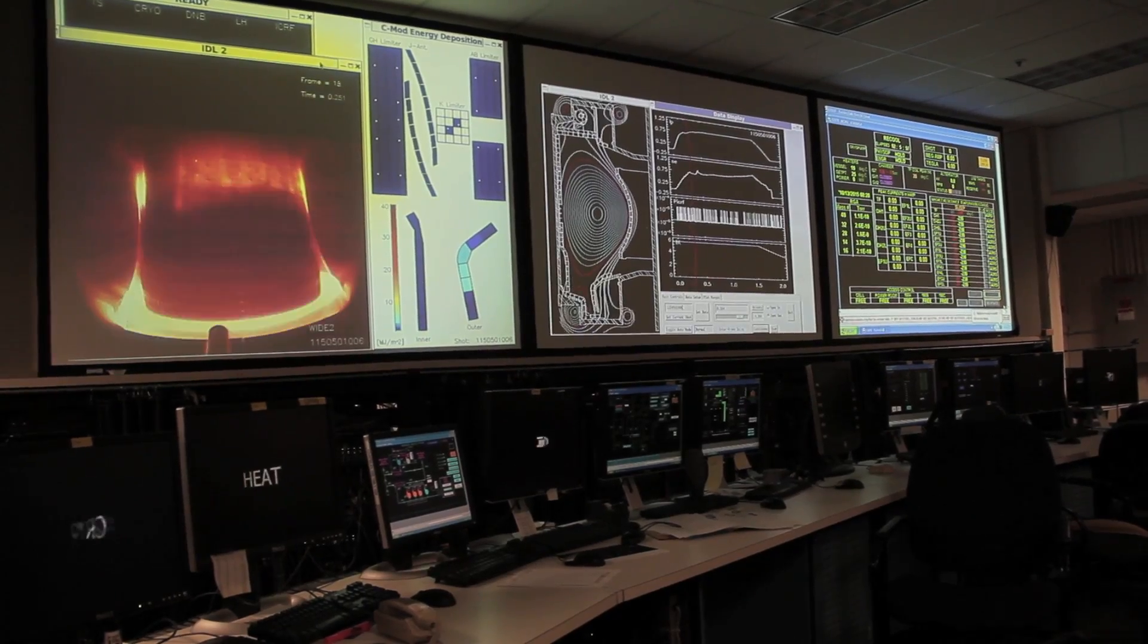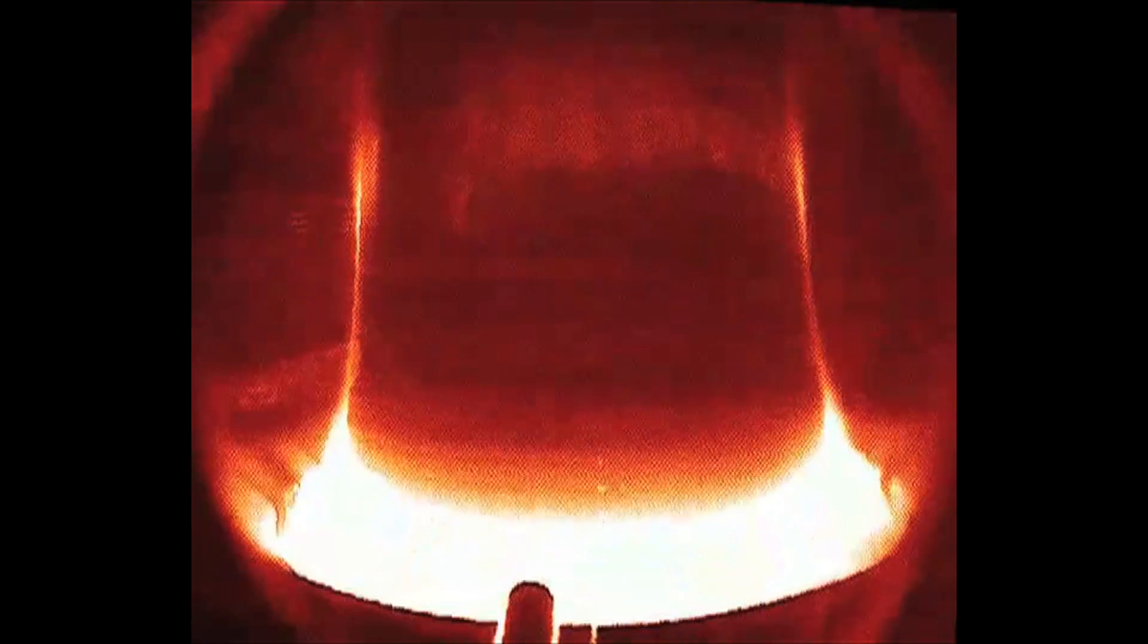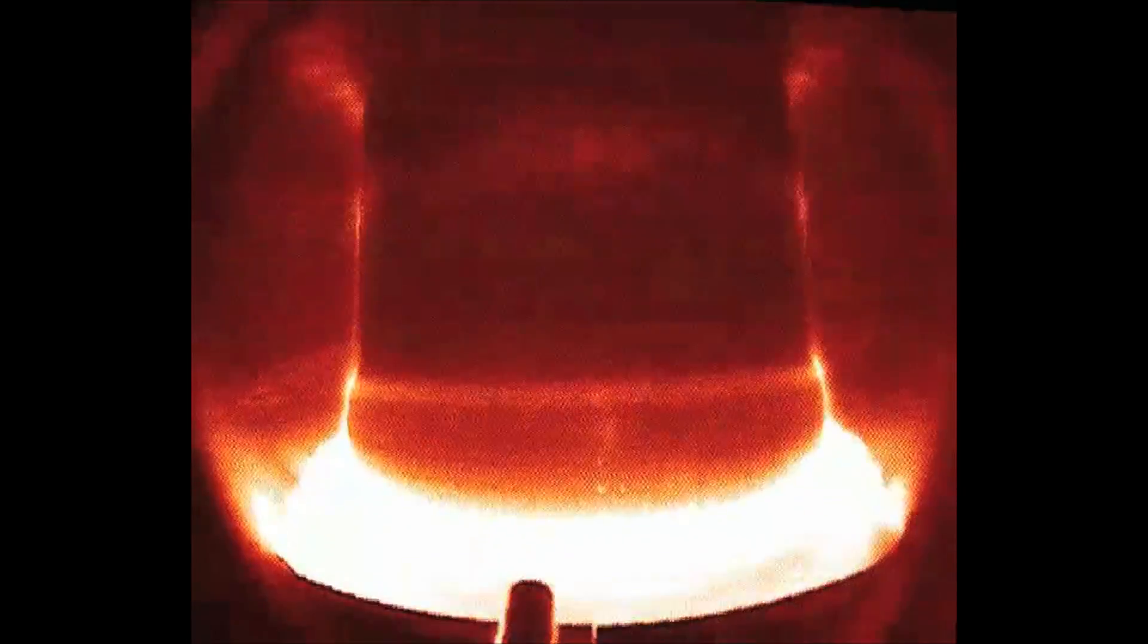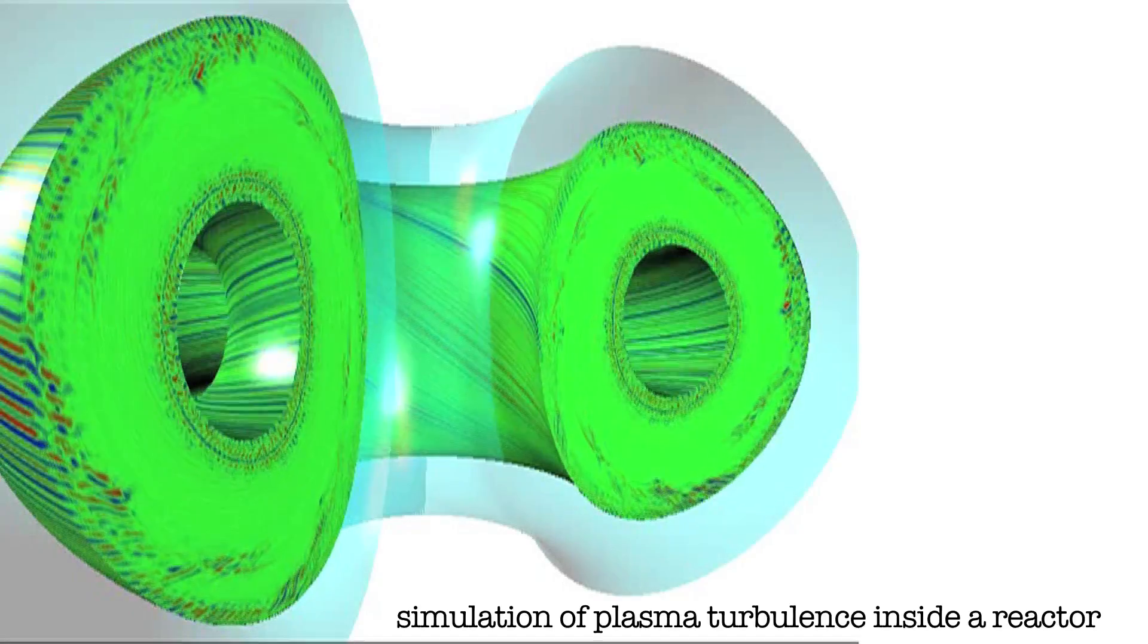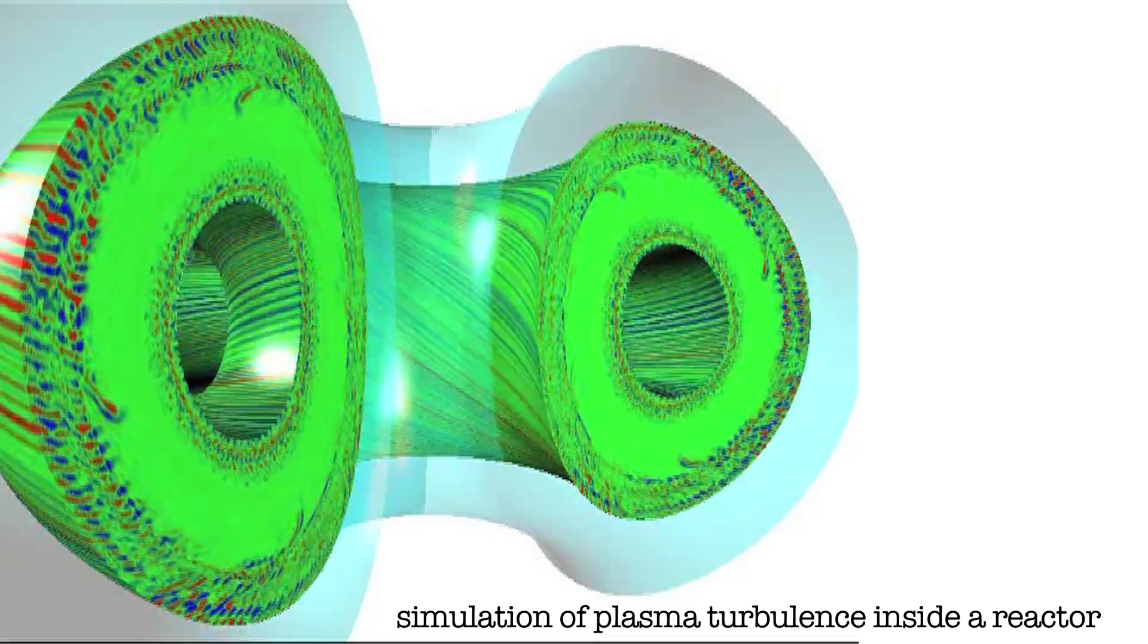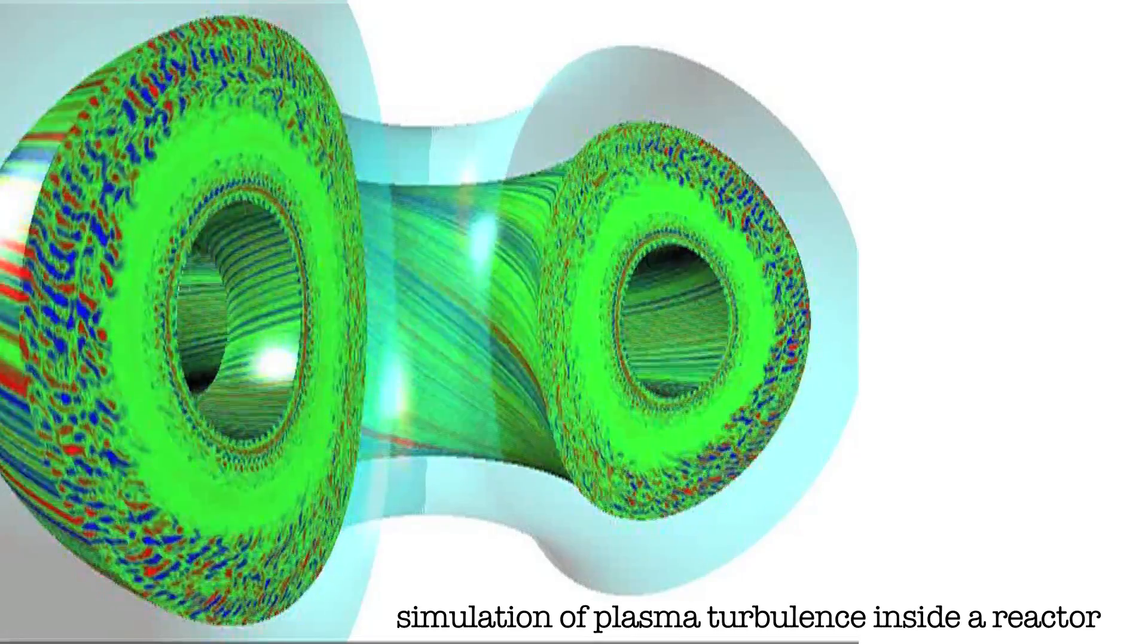The key to making fusion work is to maintain a high enough temperature and density to make the atoms stick together, overcoming their natural resistance. But various kinds of turbulence within the plasma can disrupt the process, resulting in a loss of some of that essential heat.